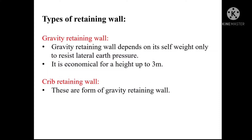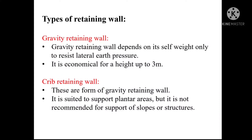Crib retaining walls are a form of gravity wall. They are constructed of interlocking individual block boxes made from timber or precast concrete. The boxes are filled with crushed stone or other coarse granular materials to create a free-draining structure. Basic types of crib retaining walls include reinforced, precast, and timber retaining walls. They are suited to support planter areas but are not recommended for support of slopes or structures.